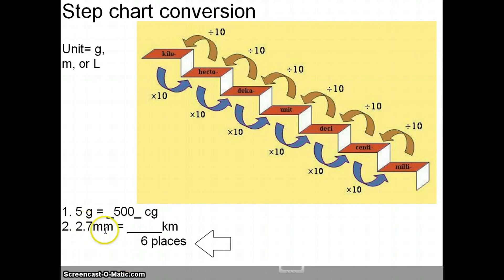The other one. 2.7 millimeters, to kilometers. Whoa. That's a lot of steps. It's okay. So, millimeters is here. Kilograms, or kilometers way up here. So, one, two, three, four, five, six places. What direction are we going? We're going to the left. So, here we go. One, two, three, four, five, six, and we're done. Yes. That's how easy it is.